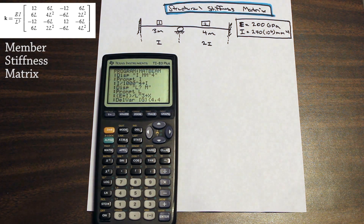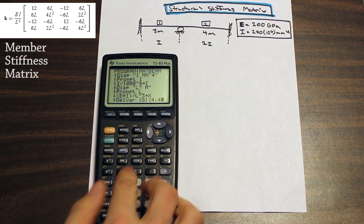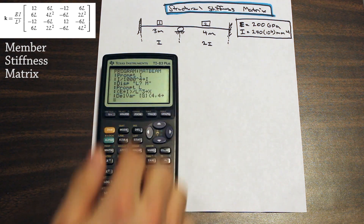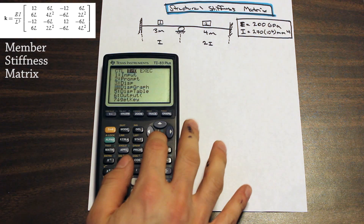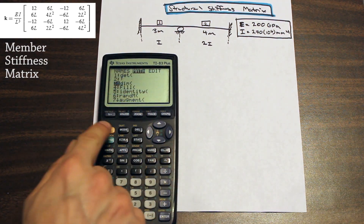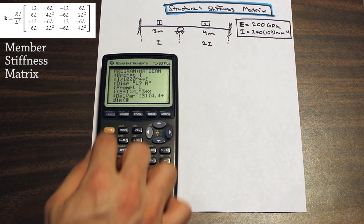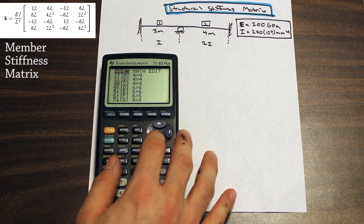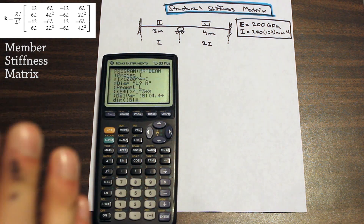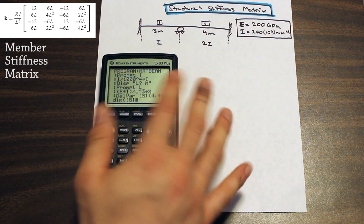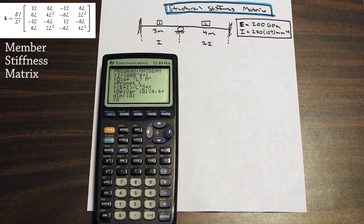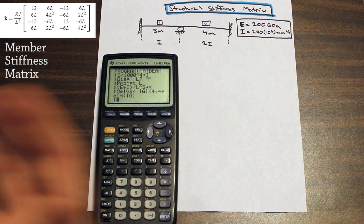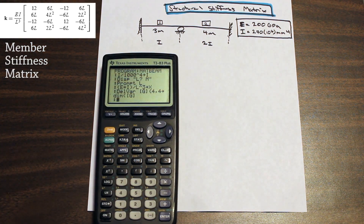We assign matrix G as a new 4x4 matrix using the store button and dim(G). If you want a 6x6 matrix for frames, do exactly the same thing but use 6, 6. Now with the matrix initialized, we're ready to start entering the equations into each matrix entry.